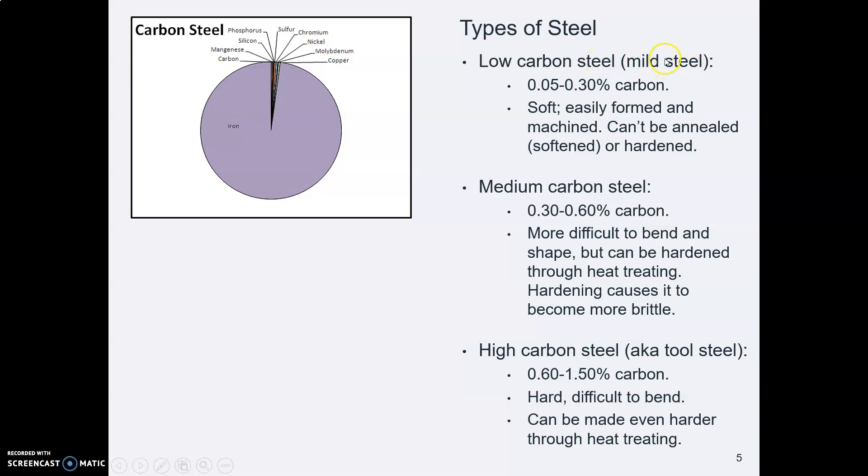And mild steel has a very small amount of carbon. High carbon steel is tool steel. It has a little bit more carbon. And then there are many, many grades in between.